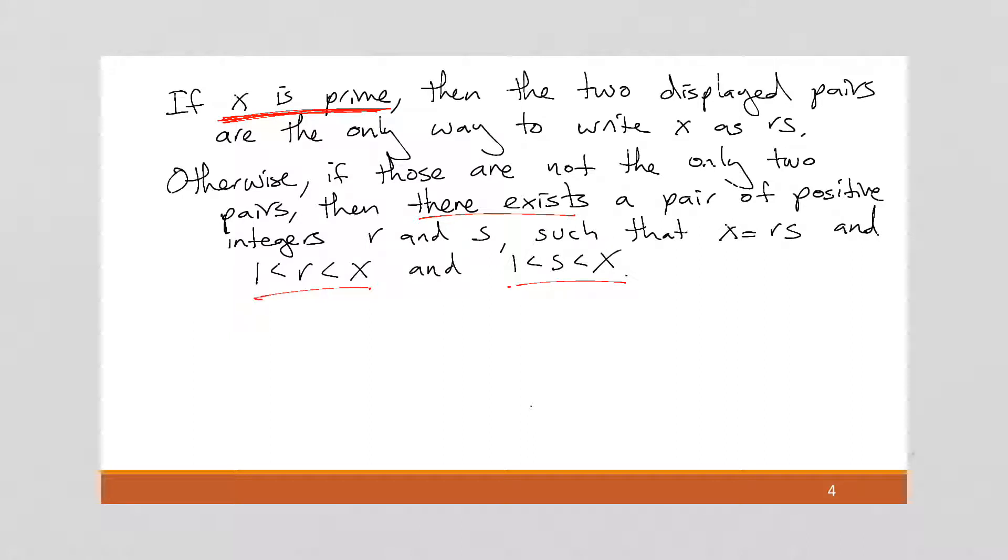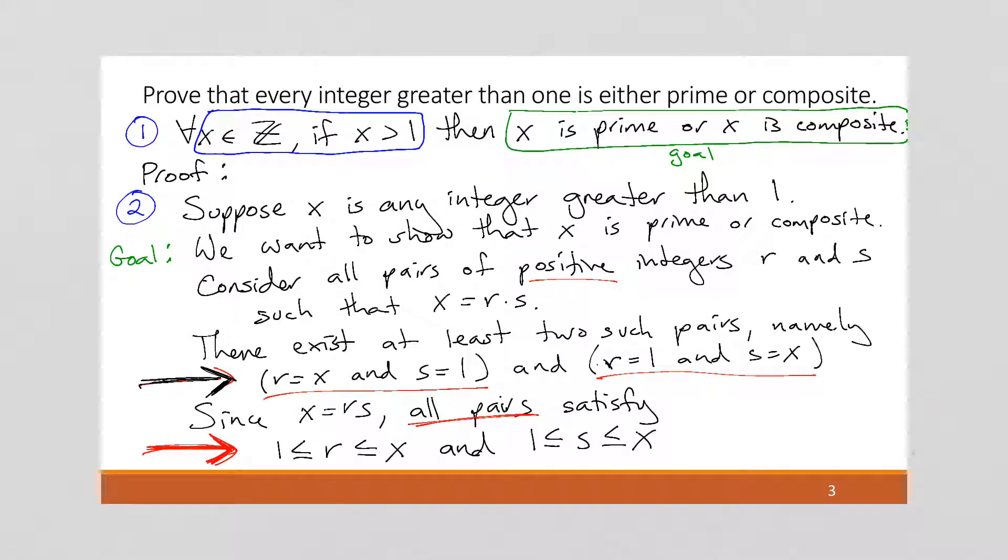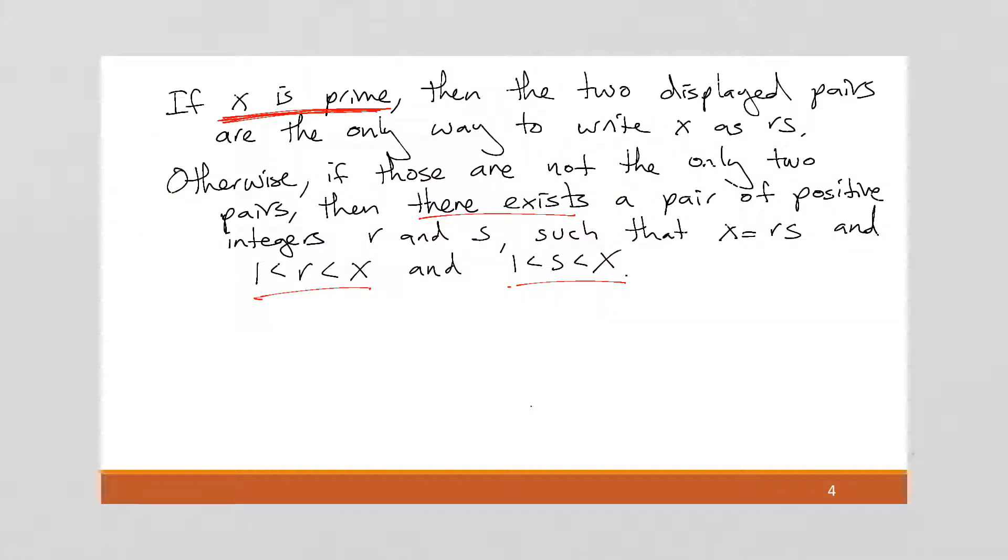Because we already said that X was positive, that was part of this, that X is any integer greater than 1. So those are the two parts of the definition for composite: that X has to be greater than 1, and that X has to equal R times S, where R and S are both between 1 and X. So therefore, we can conclude that X is composite.